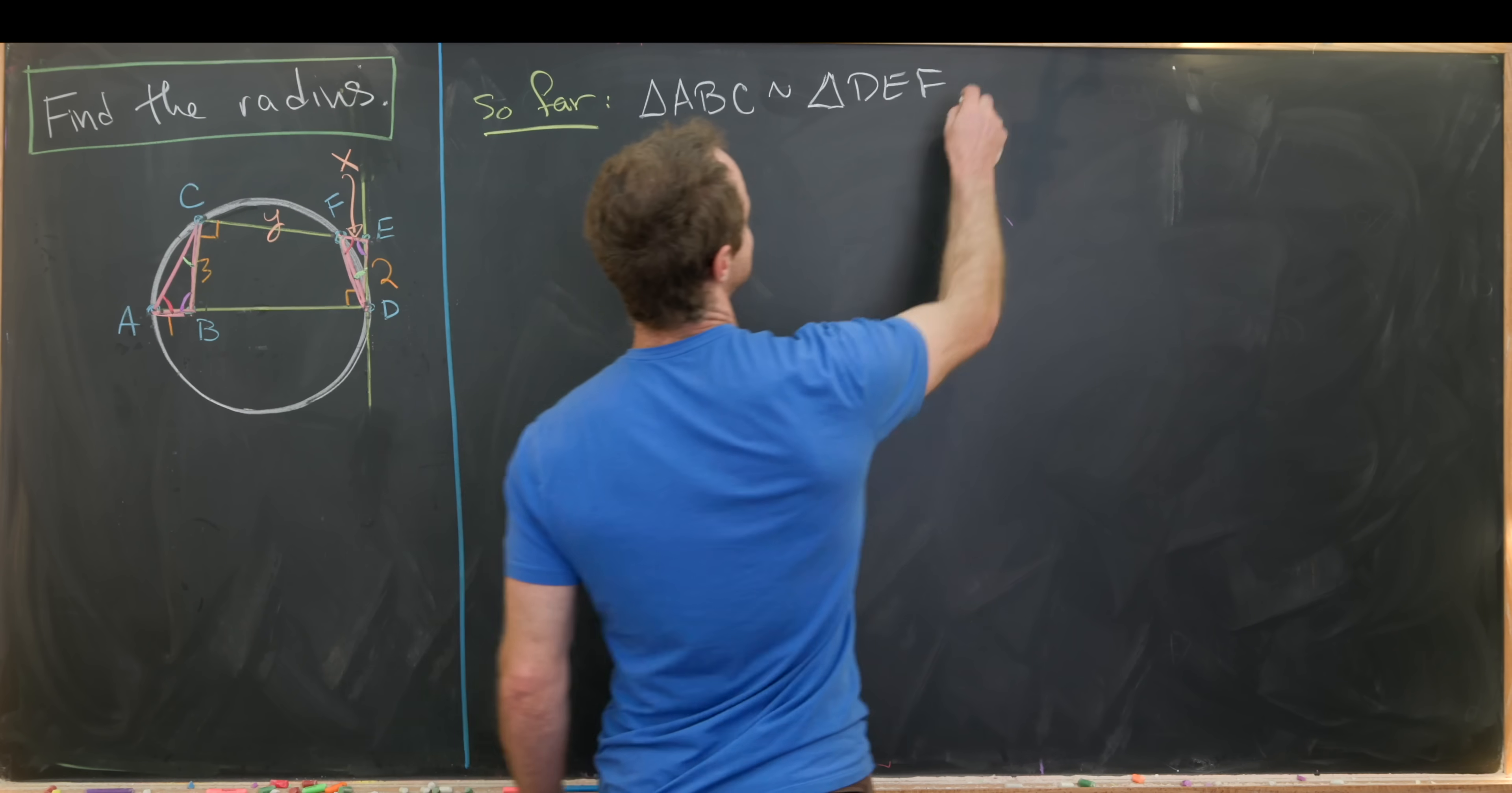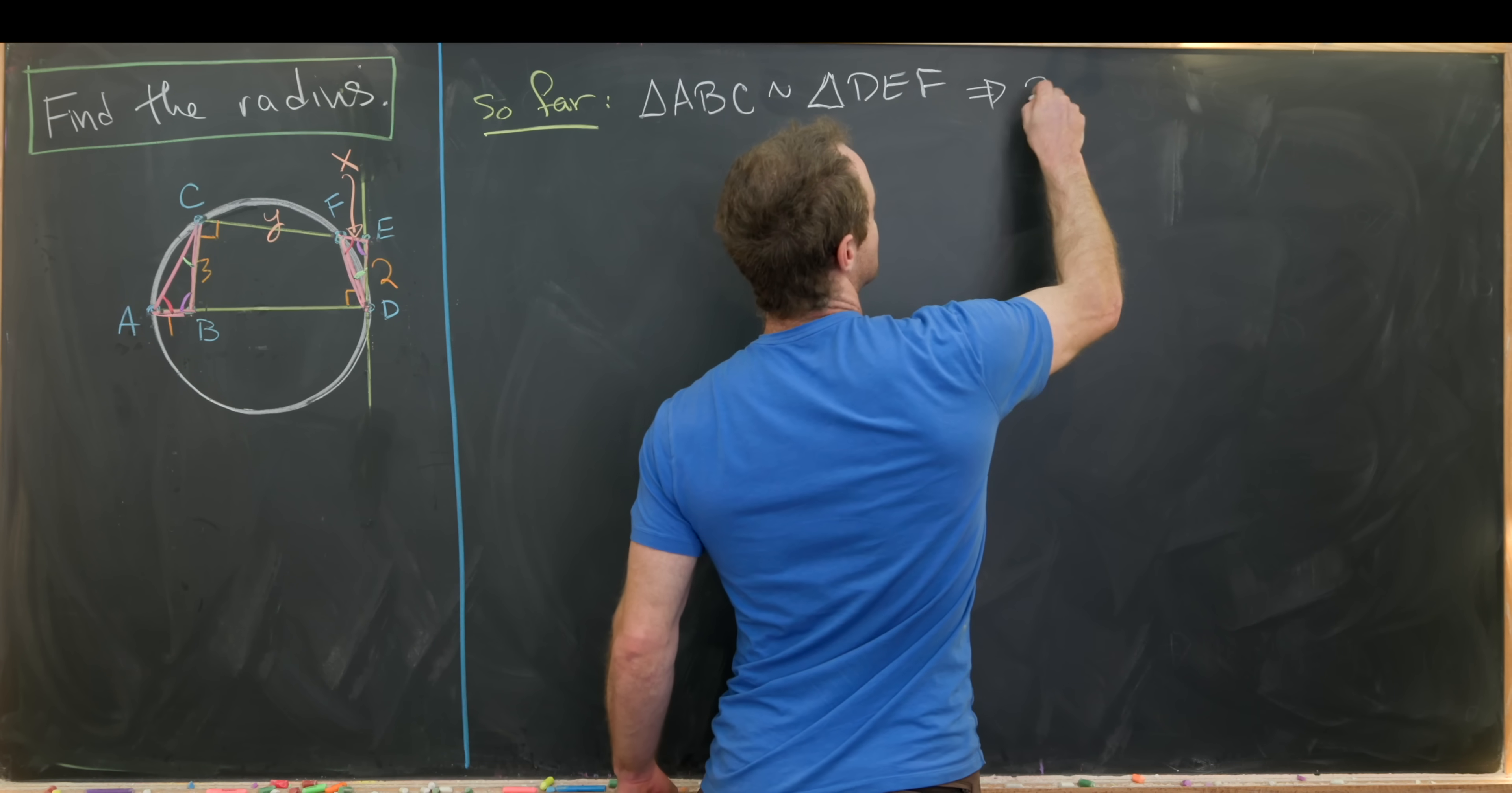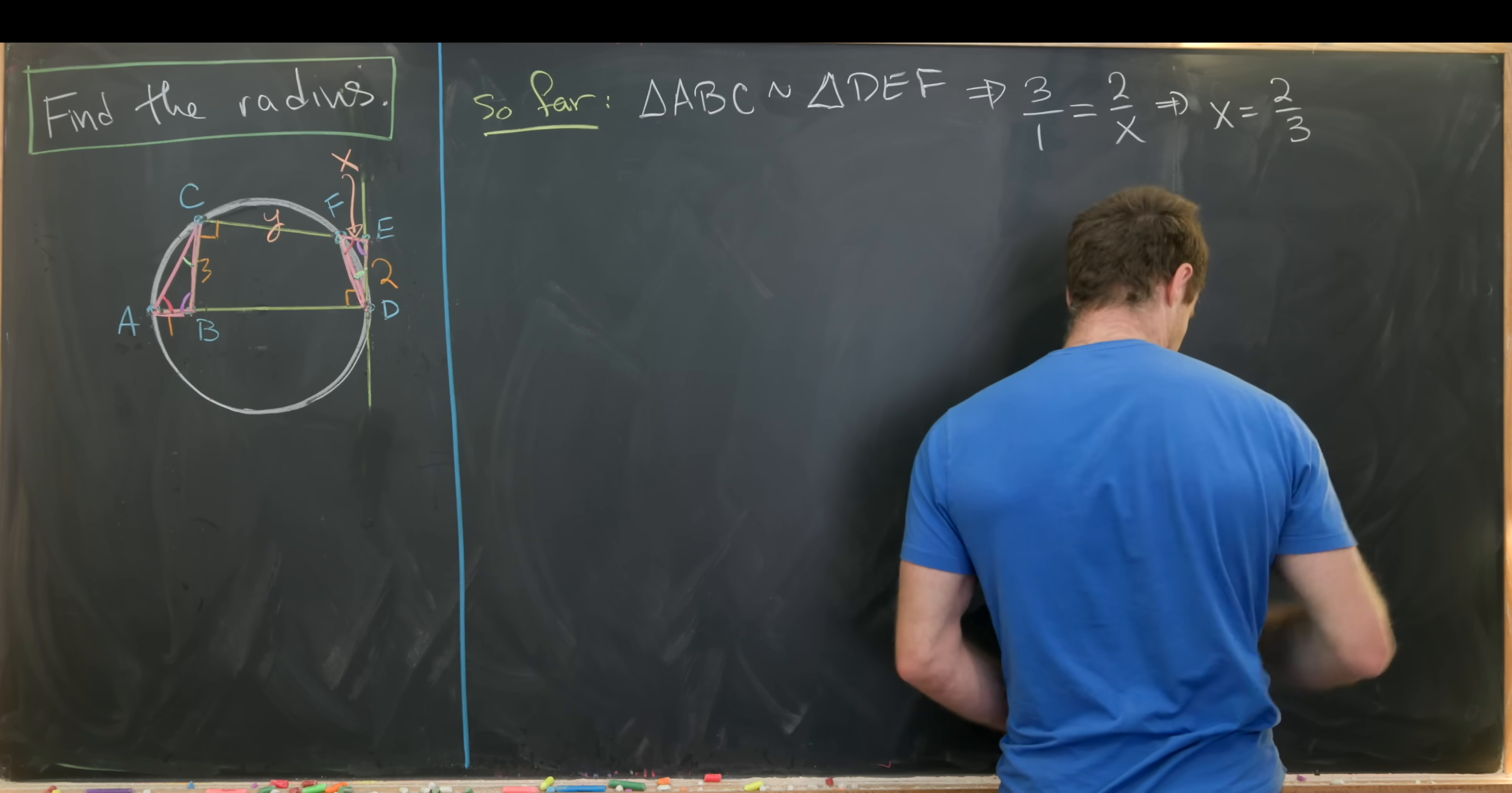But now we can apply rules about similar triangles. So we have the same proportions of the correct side lengths. And that'll give us the proportion 3 over 1 is the same thing as 2 over X. But that tells us that X is the same thing as 2 over 3.